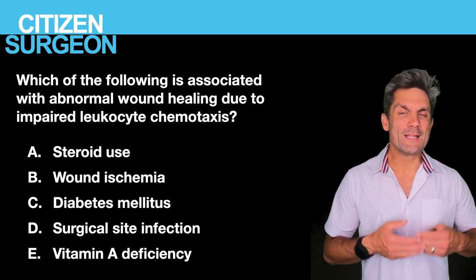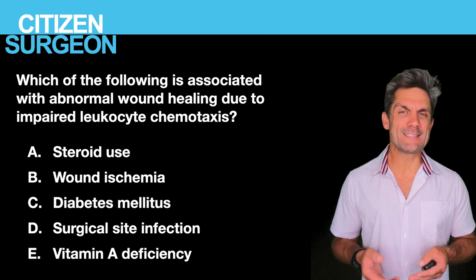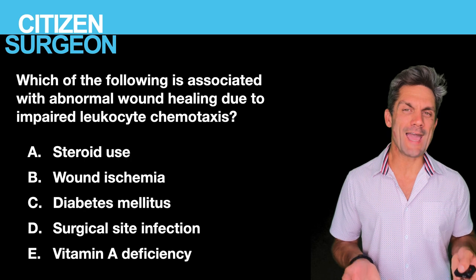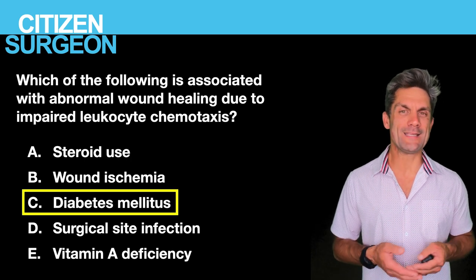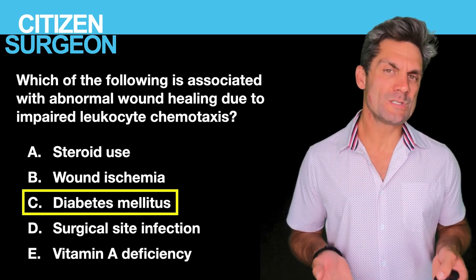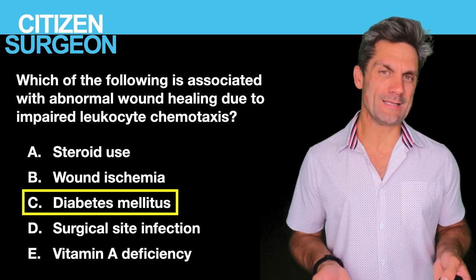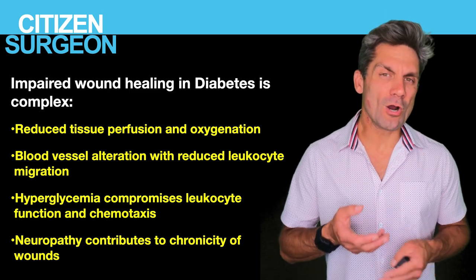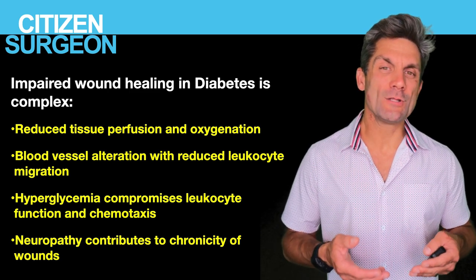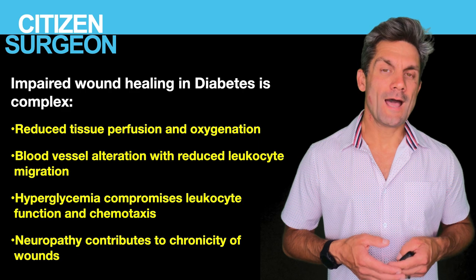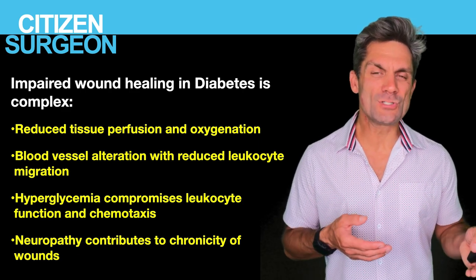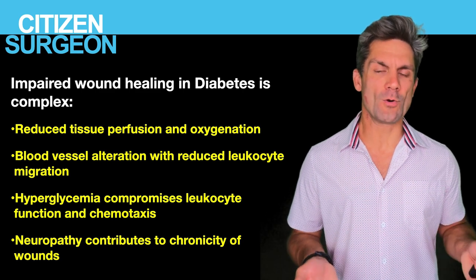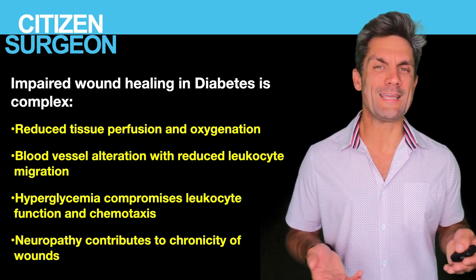Question eight: the malady associated with impaired leukocyte chemotaxis is diabetes mellitus. There are many reasons wounds fail to heal in diabetes: problems with tissue perfusion, abnormal blood vessel architecture leading to fewer leukocytes reaching the wound, hyperglycemia directly compromising leukocyte function and chemotaxis, and neuropathy — especially in the lower extremities — contributing to wound chronicity.